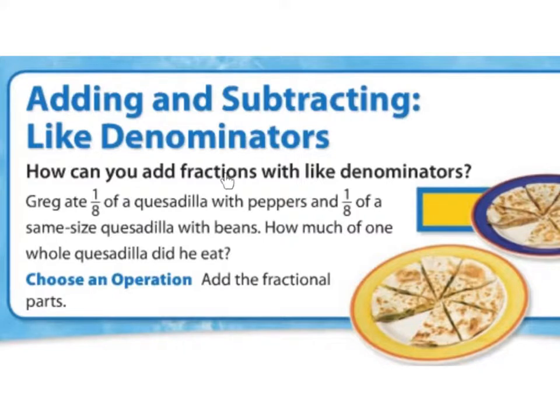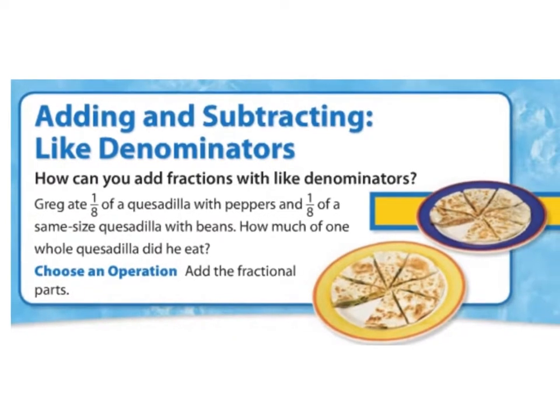How can you add fractions with like denominators? Greg ate one-eighth of a quesadilla with peppers and one-eighth of a same-size quesadilla, very important, with beans. How much of one whole quesadilla did he eat? We see pictures right over there. We see it's often hard to choose whether you want to eat two of one, so you can mix and match. So, let's add the fractional parts.